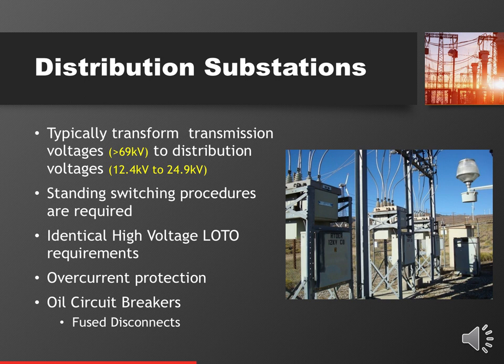Distribution subs typically transform transmission voltages down to distribution voltages, which range from about 2.1 kV up to 25 kV, though 12.4 kV to 13.8 kV is typical. These are what you'd see feeding your plant — steel mills, paper mills will typically have a distribution substation in or near the facility. Standing procedures are required; lockout/tagout requirements are no different. Overcurrent protection in a distribution sub is typically an oil circuit breaker, and sometimes fuse disconnects.